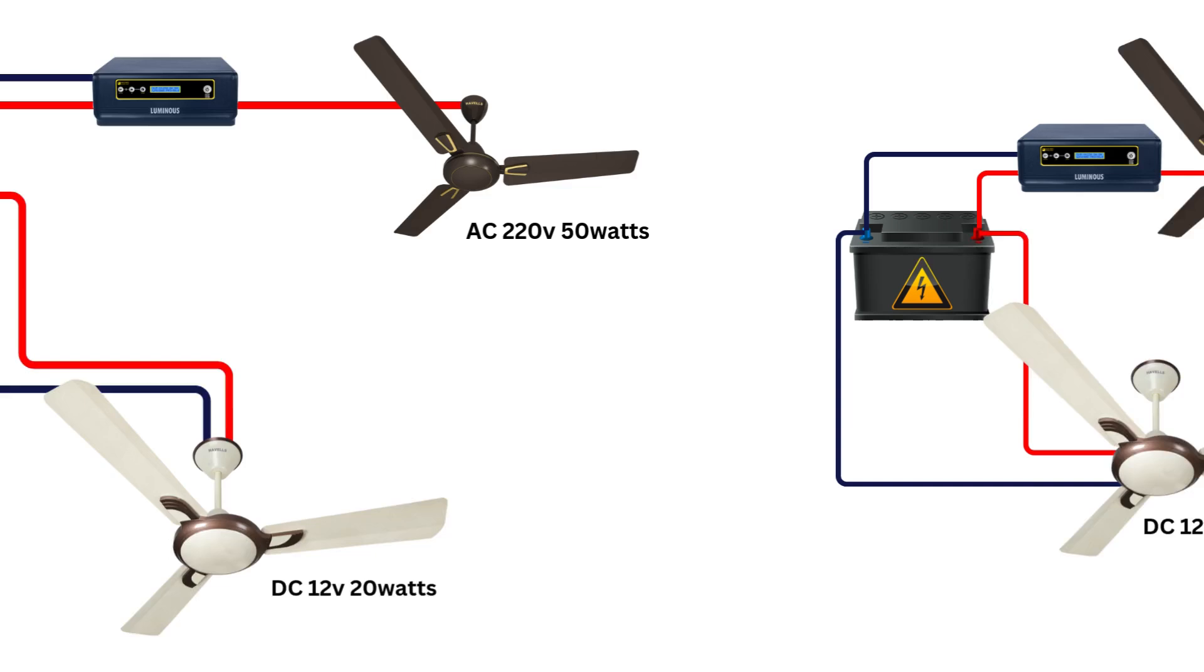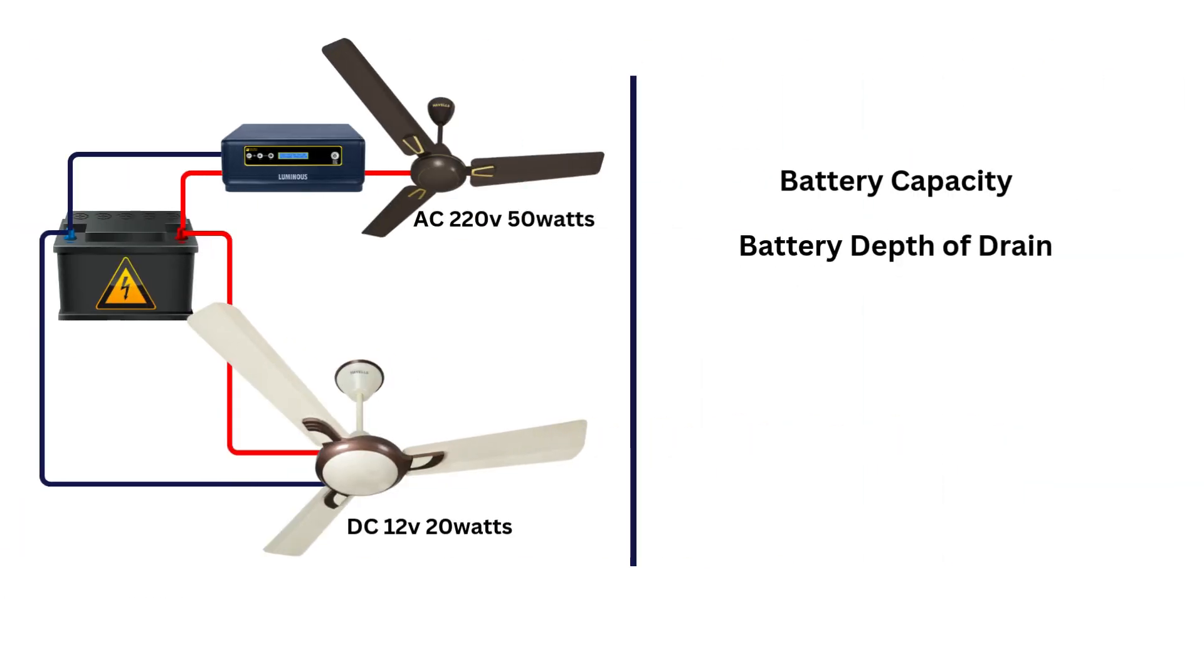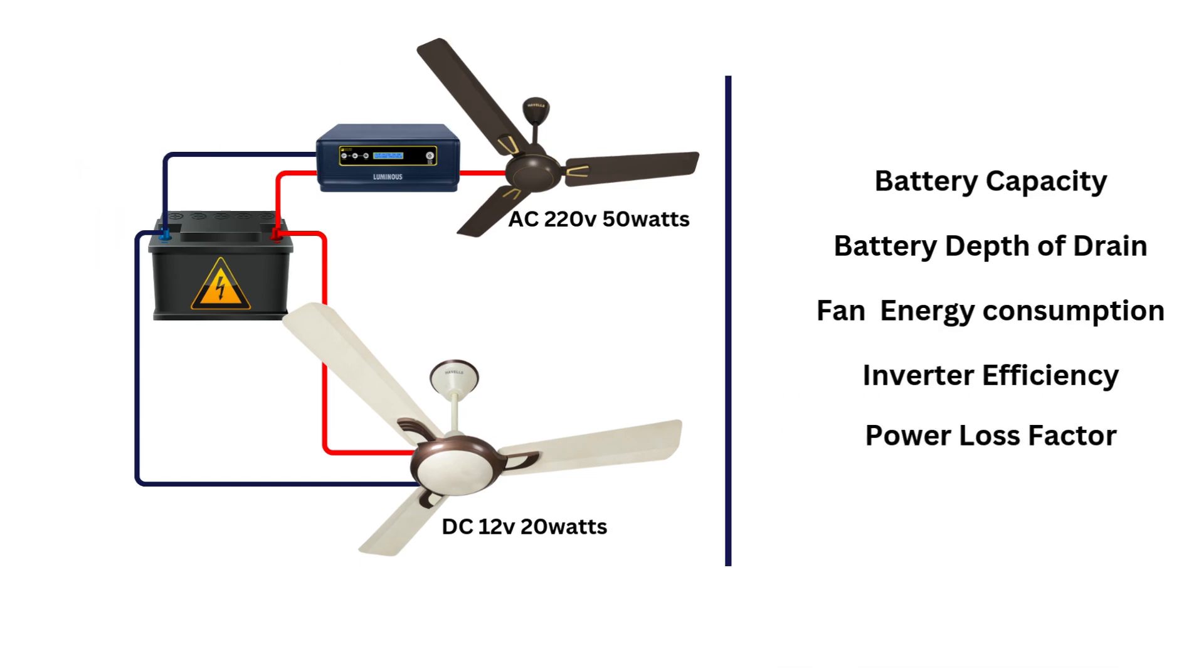For this calculation, we will use battery energy rating, depth of discharge (that's the amount of battery charge usable), fan power rating, our inverter efficiency ratio, and safety factor to get the accurate runtime. So let's start with the AC fan.